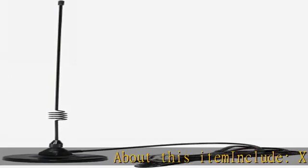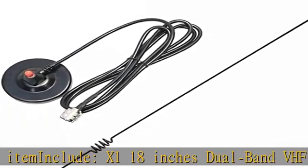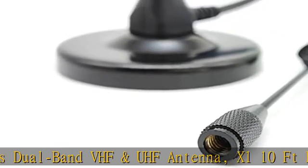About this item include: X1 18 inches dual-band VHF and UHF antenna, X1 10 feet RG58 cable with PL259 connector and magnetic base. Fast installation.